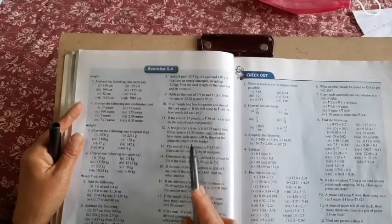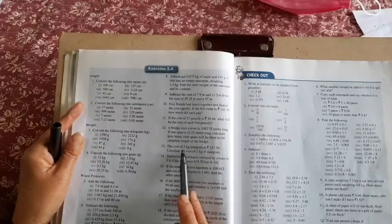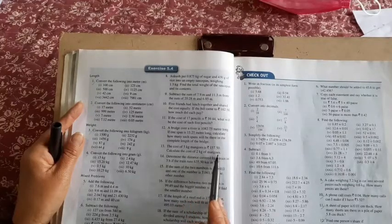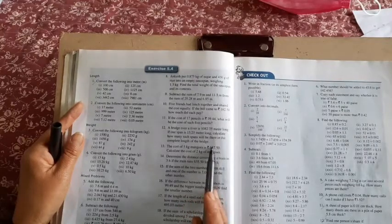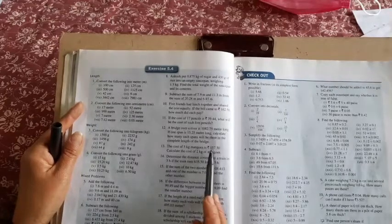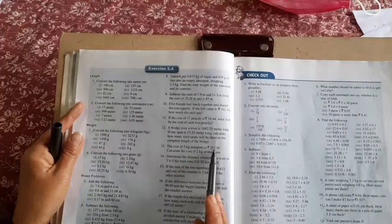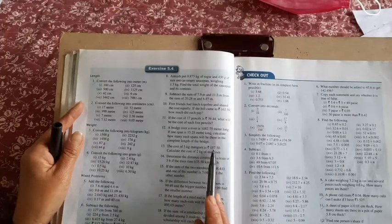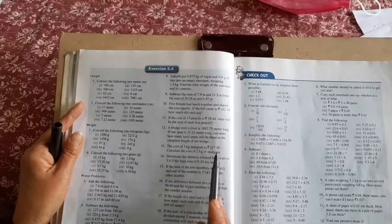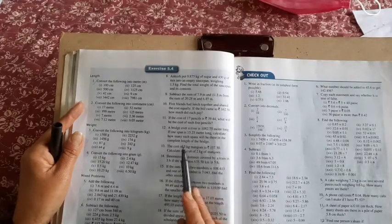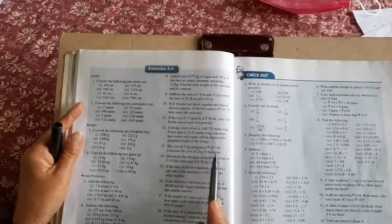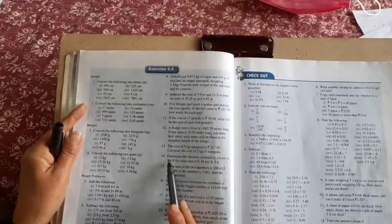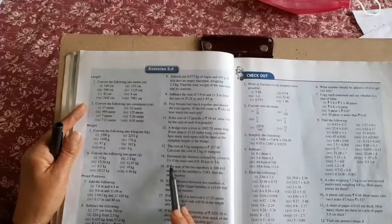Question 13: The cost of 5 kg of mangoes is rupees 157.50. Calculate the cost of 2 kg of mangoes. This is the price of 5 kg, so you need to know the price of 1 kg first. Divide 157.50 by 5, you will get the price of 1 kg. If you want to know 2 kg, multiply it again by 2. Your answer is in rupees.